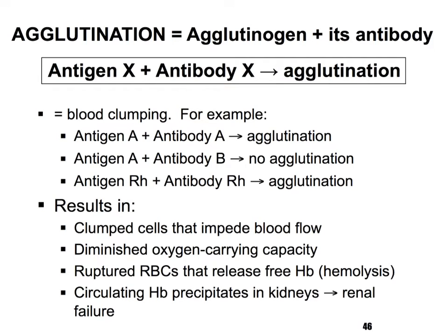This can have certain consequences, as I'll come back to in just a moment. Agglutination is when antigens and antibodies come together and create little clumps within the blood. This reaction makes it very difficult for the red blood cells to carry proper amounts of oxygen, and it can even cause the red blood cells to lyse such that hemoglobin is released into the bloodstream, which is poisonous. That hemoglobin can also precipitate in the kidneys — it's a big protein — and cause renal failure.